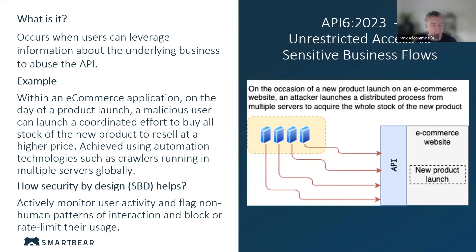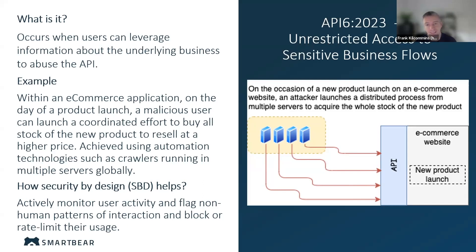For example, let's assume we have a products API being exposed to an e-commerce application, and we're about to launch a new product. A bad actor learns the specific day and time of the launch, sets up a coordinated automated approach to buy all of the new products, leaving none available, and then resells them at a higher price through a third-party offering.